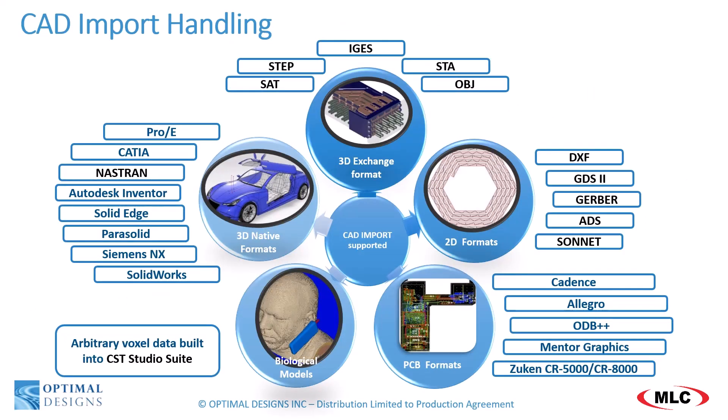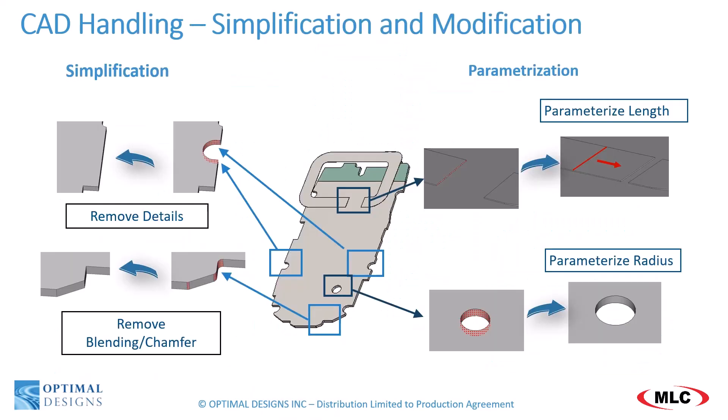CST allows for seamless collaboration with a broad selection of mechanical CAD systems, including SOLIDWORKS, CATIA, STEP, OBD, and more. After importing a CAD model, the user can still make geometry operations to the objects, including removing unneeded features for EM analysis as well as parameterizing planar or circular faces.